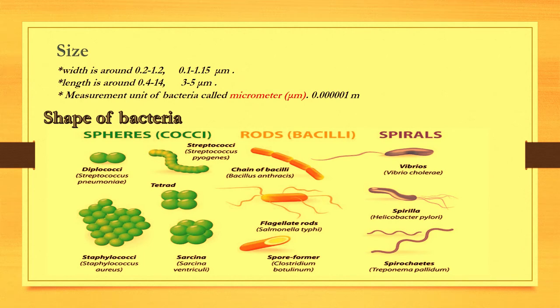An example is Streptococcus pyogenes. There is a type that forms four globules and it's called sarcina. The second type is bacillus, which means rod shape. An example of this type is Bacillus anthracis, which resembles a chain.